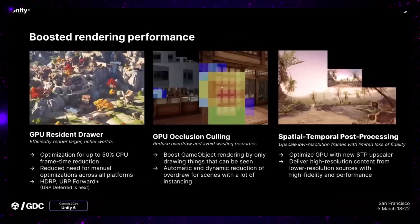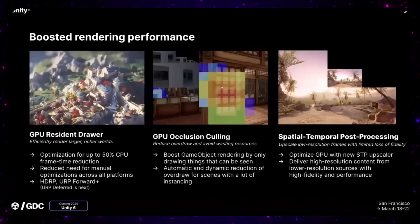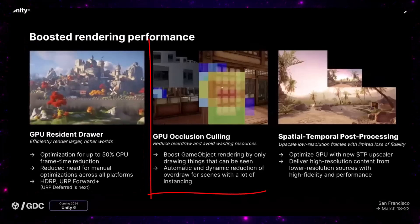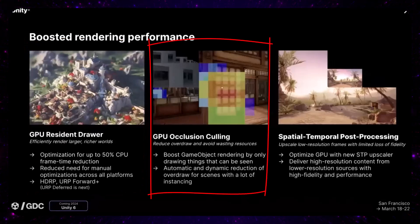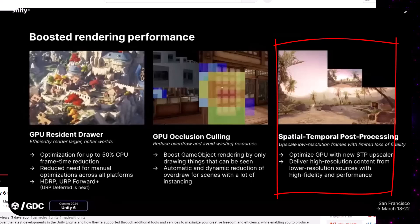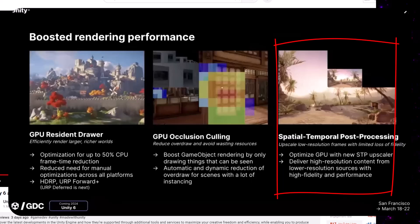First off there were some really cool things with rendering. They've added new features that make things go faster — they've got a GPU resident drawer which sounds really awesome and extremely fast, GPU occlusion culling for more performance improvements, and the biggest one: STPP, Spatial Temporal Post Processing, which allows them to render at a very low resolution and then upscale without losing any quality. From what I gathered you can render down at almost one tenth of the resolution and still get near the same visual fidelity by upscaling using AI.